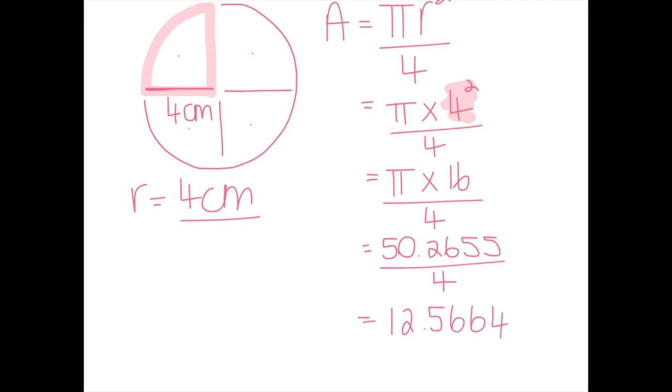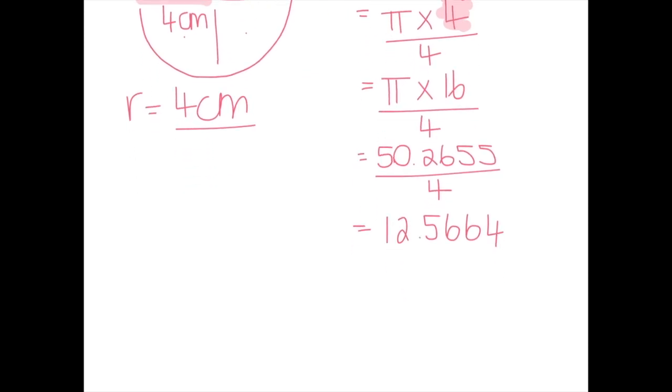I'm only going to want two decimal places, so I'm going to say five six, but this six is higher than five, so that's going to mean this one's going to round up. So twelve point five seven, I'm looking at centimeters, and it's area, so I know my units are squared.